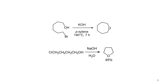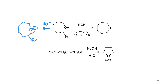The Williamson ether synthesis can also be carried out in an intramolecular fashion. If you have an alcohol and an alkyl halide in the same molecule and they can form a reasonably unstrained ring — five, six, seven, or larger — then the reaction can happen intramolecularly. In this example, potassium hydroxide deprotonates the alcohol, converting it into the alkoxide ion, and then an intramolecular SN2 reaction produces the cyclic ether product.